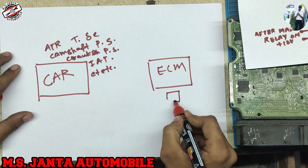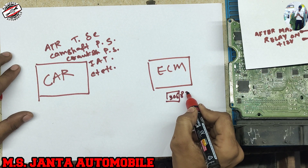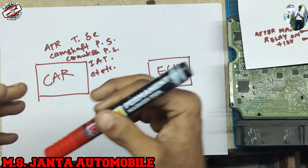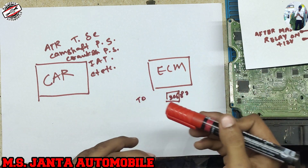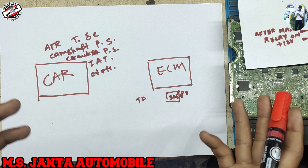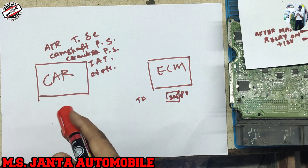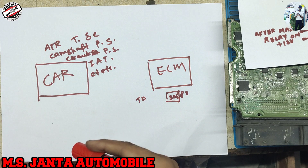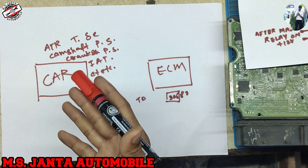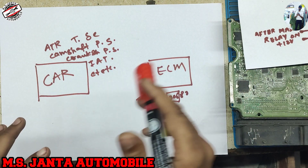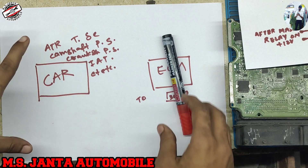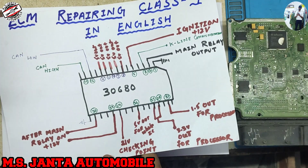But an ECM repairer who repairs ECM at expert level can find from IC to sensors — they know which IC is used for which sensor, which processor is used for which work. So there is a major difference between an electrician and an ECM repairer. If you want to start ECM repairing, first you have to gain knowledge about wiring, engine mechanical, engine wiring, and sensors, then move forward to ECM repairing.